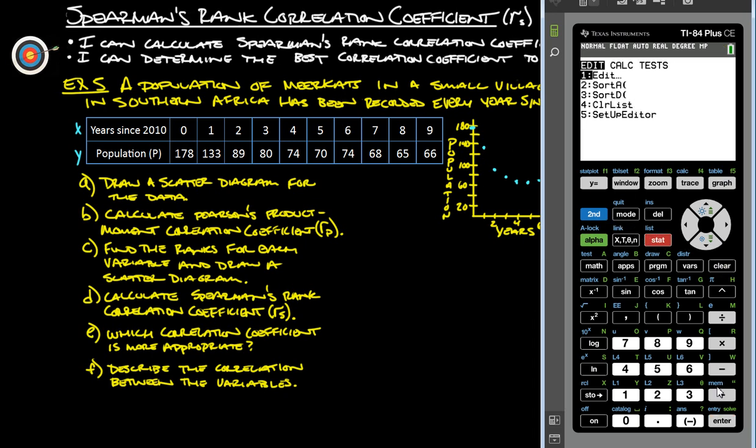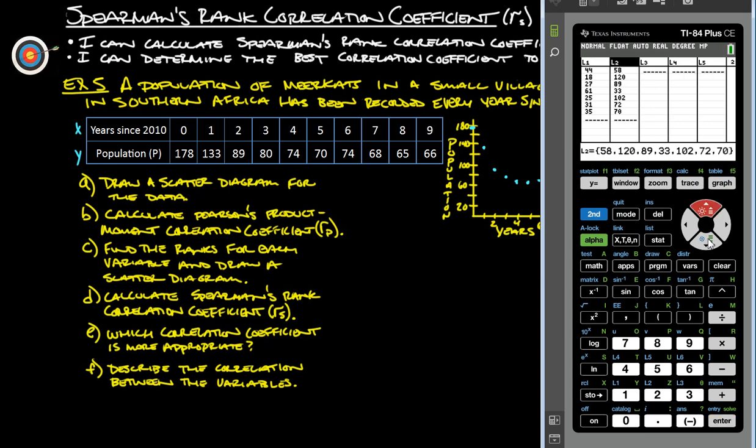So stat, we're going to edit our data. And first thing we're going to do is clear all this data out here. And then enter it all in. So 0, 1, 2, 3, 4, 5, 6, 7, 8, 9 into list 1, and then all these populations into list 2.